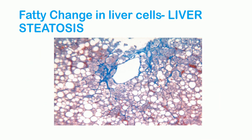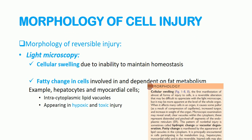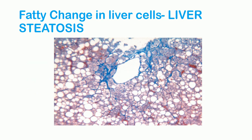Cellular swelling is the first manifestation of almost all forms of injury to cells. It is a reversible alteration that may be difficult to appreciate even with a light microscope. However, it may be more apparent at the level of the whole organ when it affects many cells, causing increased turgidity and increased weight of the organ.